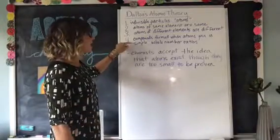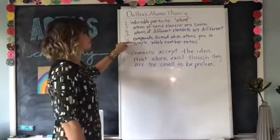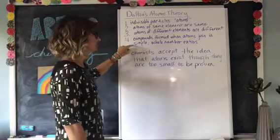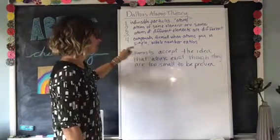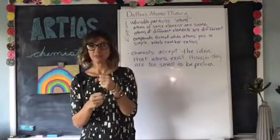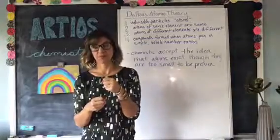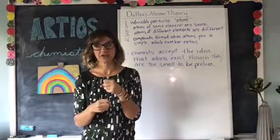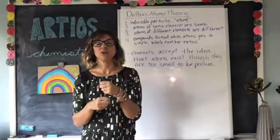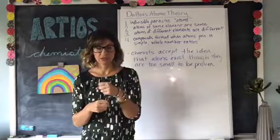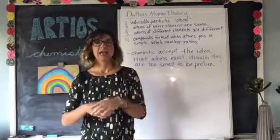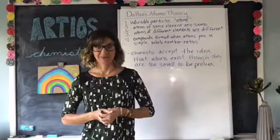Fourth: compounds are formed when atoms join in simple whole number ratios. When atoms join together, they can't be split into a half or a third — so they join in simple whole number ratios, say two atoms of this to three atoms of that, and that's what we call a compound.